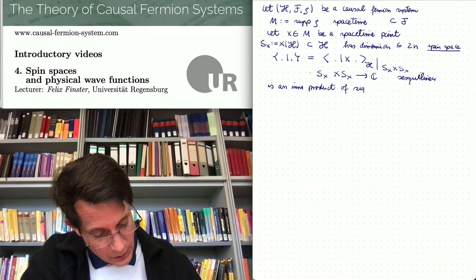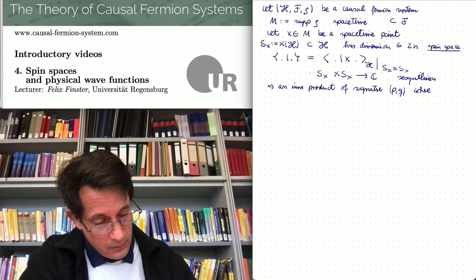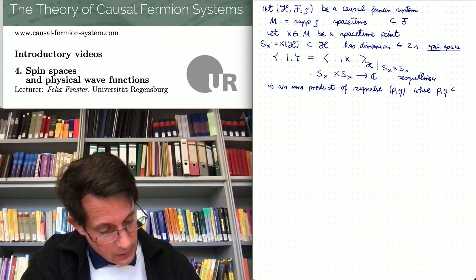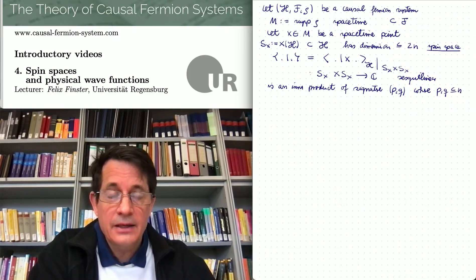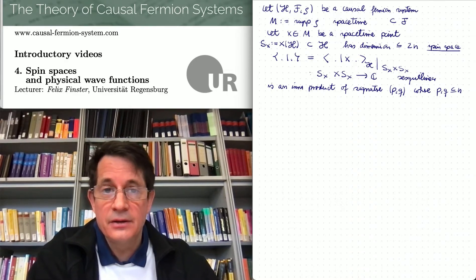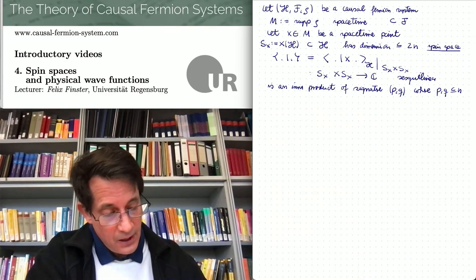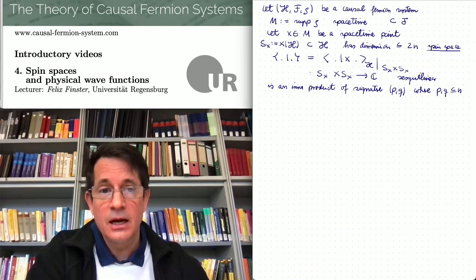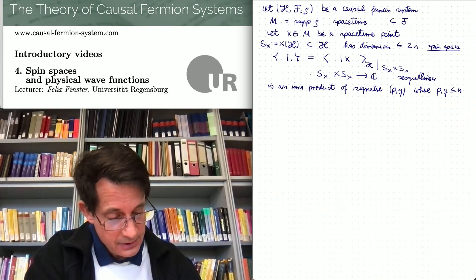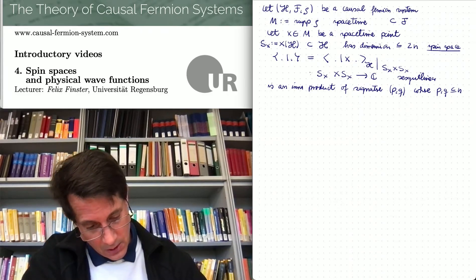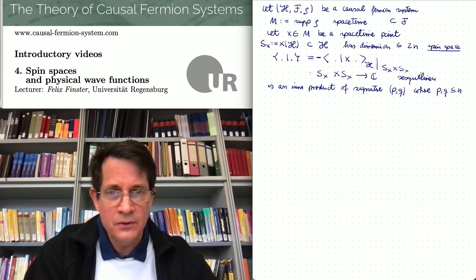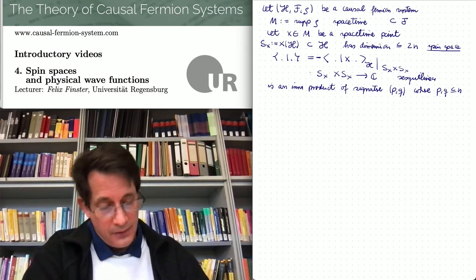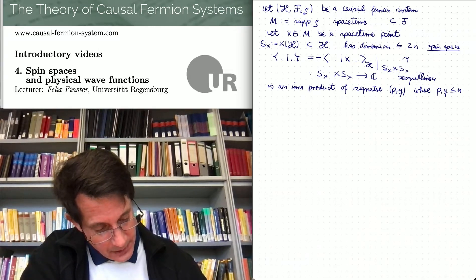So the operator x is the signature operator. In this way we get a mapping from Sx cross Sx to the complex numbers. It's sesquilinear, antilinear in the first and linear in the second argument, and it is in fact an inner product, non-degenerate, but it doesn't need to be positive definite. Instead it has signature p, q where p and q are at most n.